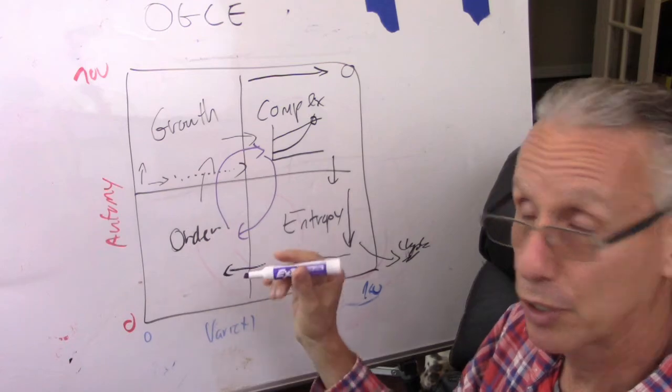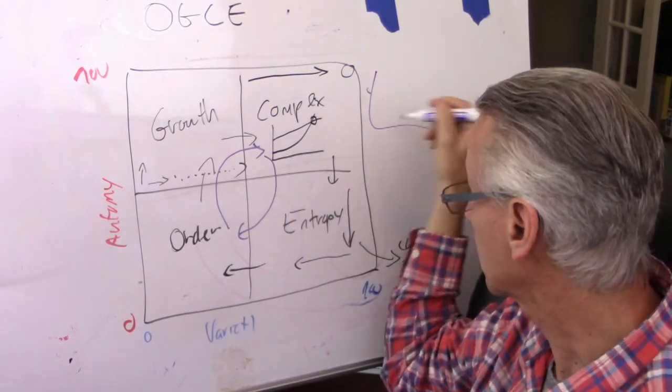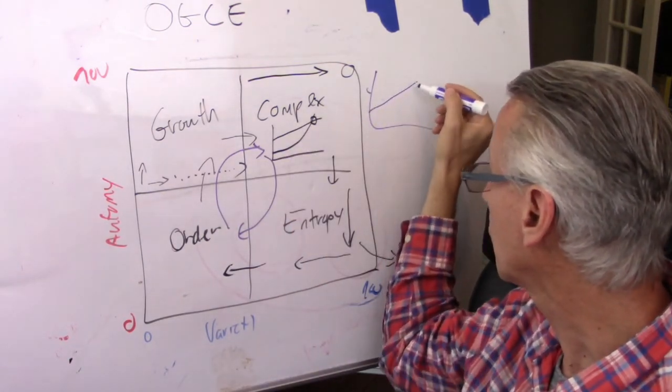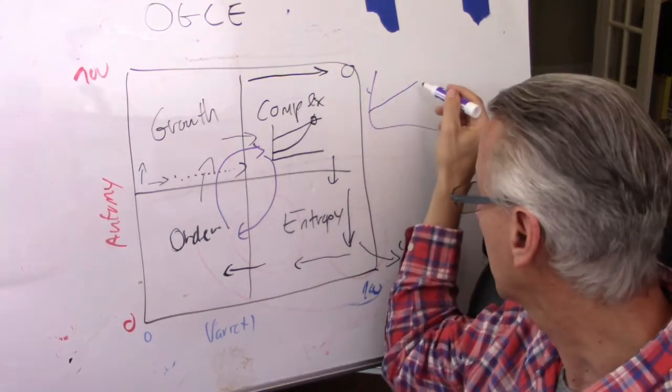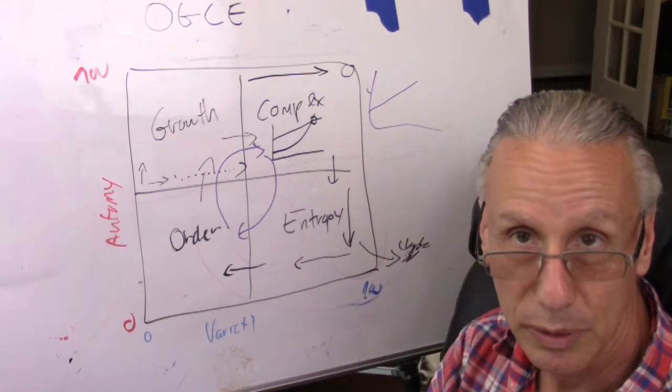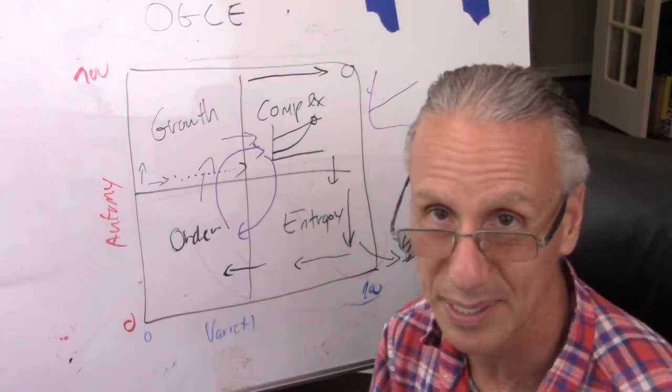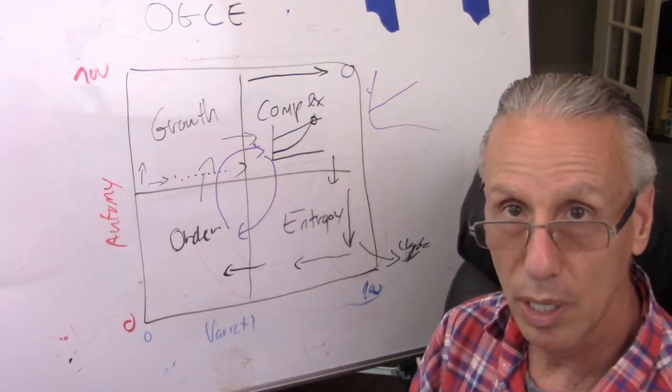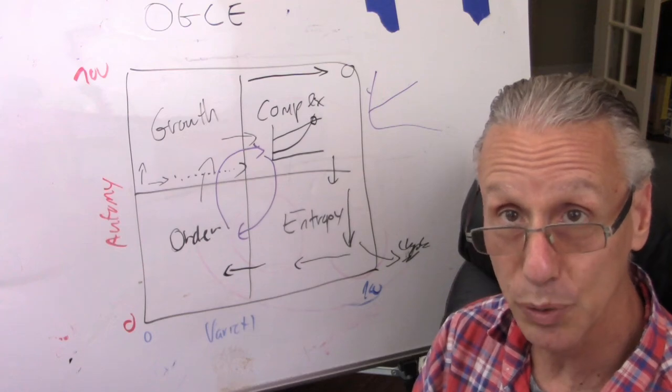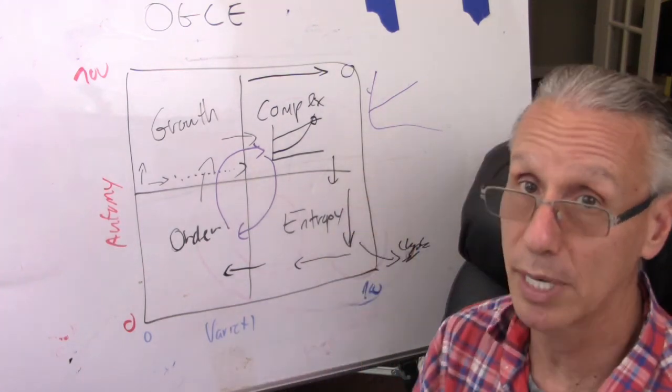One way or another, eventually, the complexity level will grow onto a level that chapter 11 will eventually happen. That's happened to each and every system, whether we like it or not in the end. So, hopefully, that model helps you to get your head around complexity.